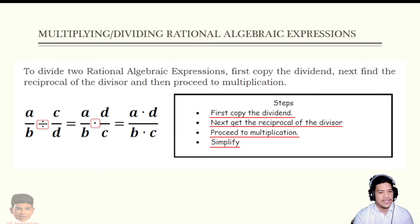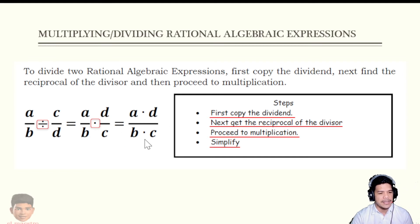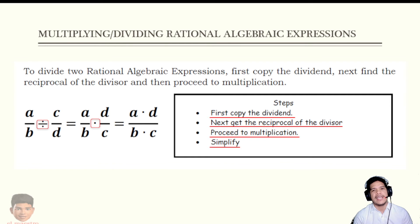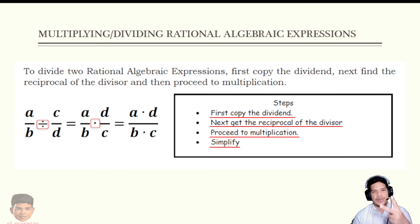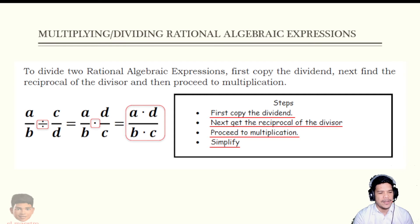After getting the reciprocal, we proceed to multiplication. So from division, after copying and taking the reciprocal of the divisor, we now apply the rules of multiplication: multiply A times D and B times C, then factor out, eliminate common factors, and simplify. The rules of multiplication we discussed earlier are what we use from this point forward.